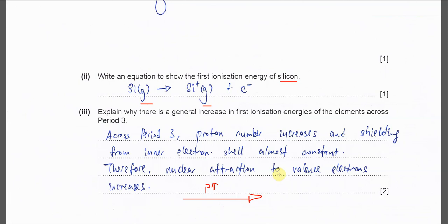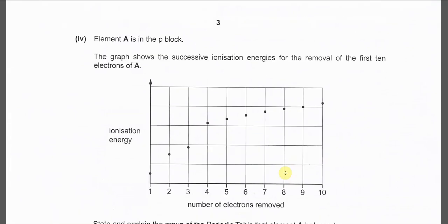We know that inner shell, they are the same means shielding is almost constant. The shielding is almost constant because of the proton number increases and the shielding is not really increased together as it's almost constant, same number of inner shell. Therefore the nuclear attraction will increase across a period. The nuclear attraction towards the valence electron will increase.